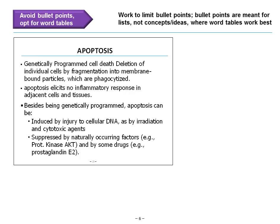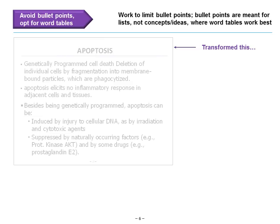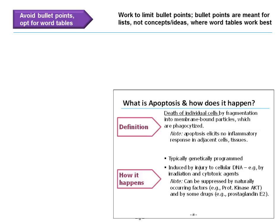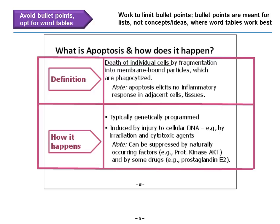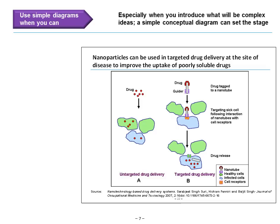Next, avoid bullet points — opt instead for word tables. Let's look at our apoptosis slide again. We transform the bullet-point version into a table. We've created a table with rows and columns and defined our categories within each row and column. As you can see, it's much easier to read than a succession of bullet points. It also takes advantage of the horizontal flow of PowerPoint slides, as opposed to the vertical layout more applicable for standard paper presentations.